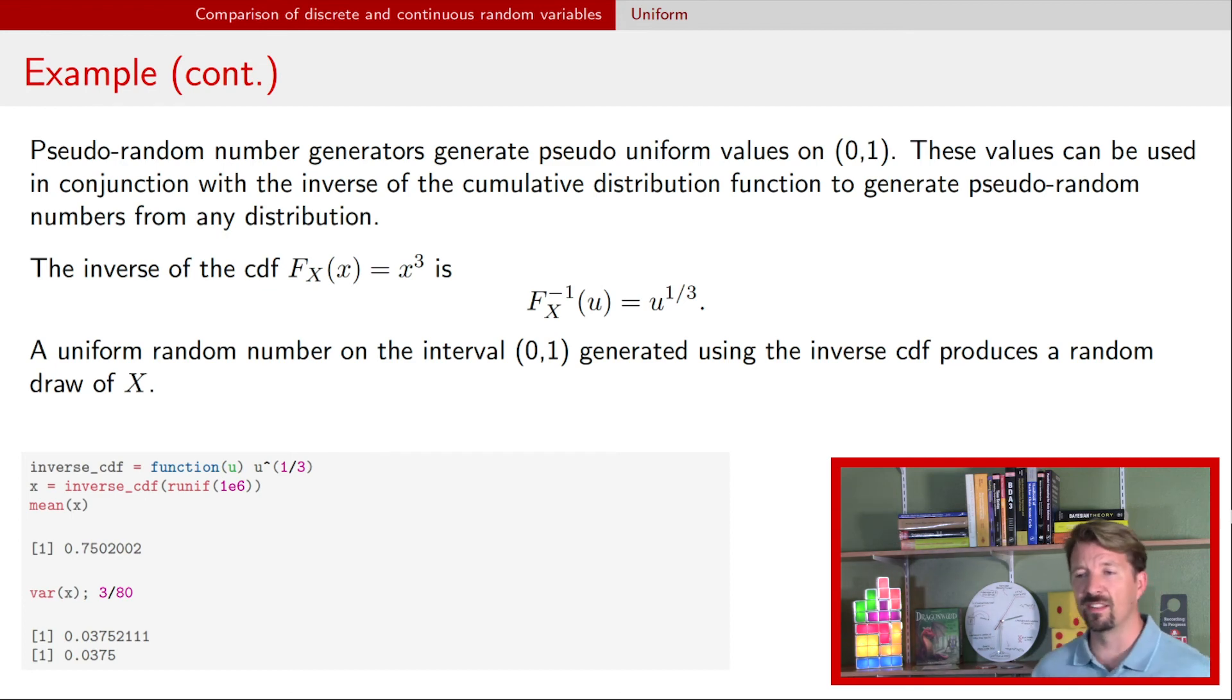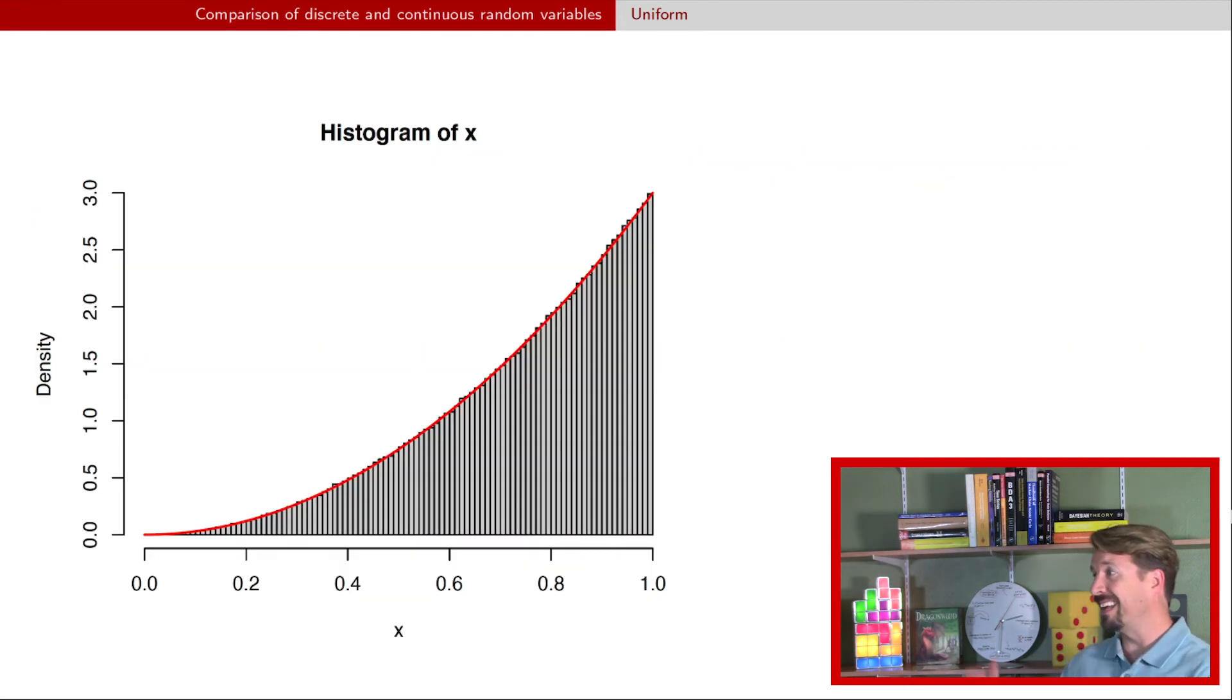As a final note on this particular process, here is a histogram of the draws that we had from using that pseudorandom number generator and raising it to the one-third power. The histogram, those vertical rectangles, provide an accounting for how many of those random variables were in each bin on that x axis. So most of them were close to one. There were very few that were close to zero.